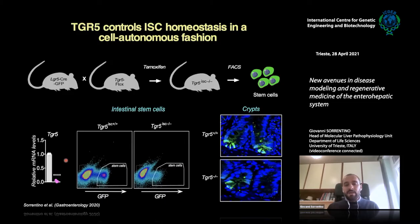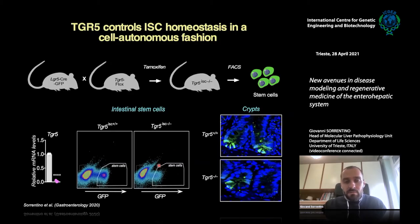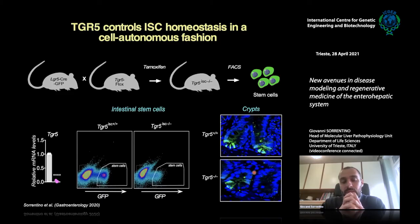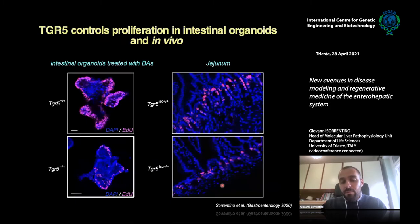To prove that TGR5 expression in stem cells is required for intestinal homeostasis, we generated a new transgenic mouse by crossing the Lgr5-reporter mouse with the TGR5-flox mouse. After tamoxifen injection, we specifically deleted TGR5 only in stem cells, confirmed by GFP-positive cell sorting. Strikingly, we observed a strong reduction in the number of stem cells throughout the gut after TGR5 deletion, confirmed by immunofluorescence — many crypts were completely depleted of stem cells. This suggests TGR5 activation by bile acids is required for maintenance of the intestinal stem cell pool in vivo, associated with reduced proliferation.